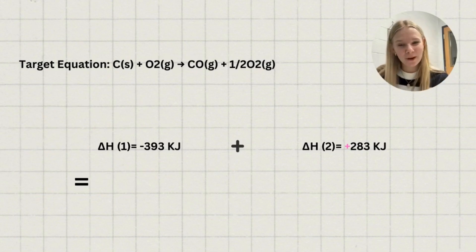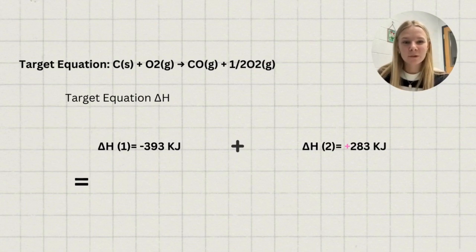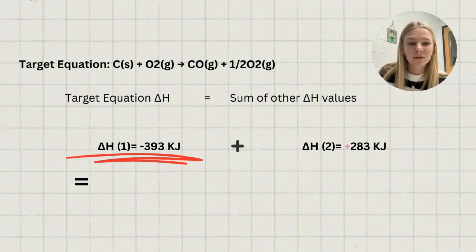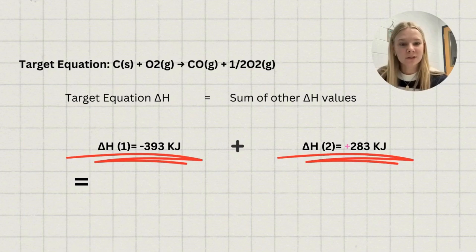How do you do this, you may ask? Well, let me show you. The delta H value of our target equation equals the sum of the delta H values of the given equations. So we add the delta H value of our first equation, which is negative 393 kilojoules, to our delta H value of our second given equation, which is positive 283 kilojoules. Remember that this is a positive number because we had to flip our equations. The sum of these two values is a whopping negative 110 kilojoules.